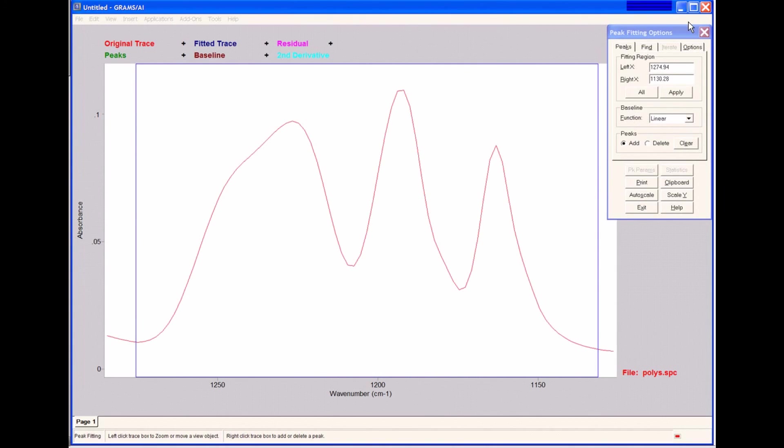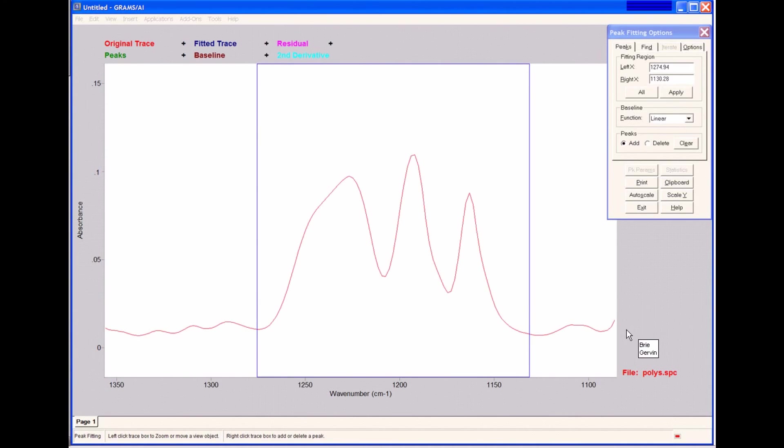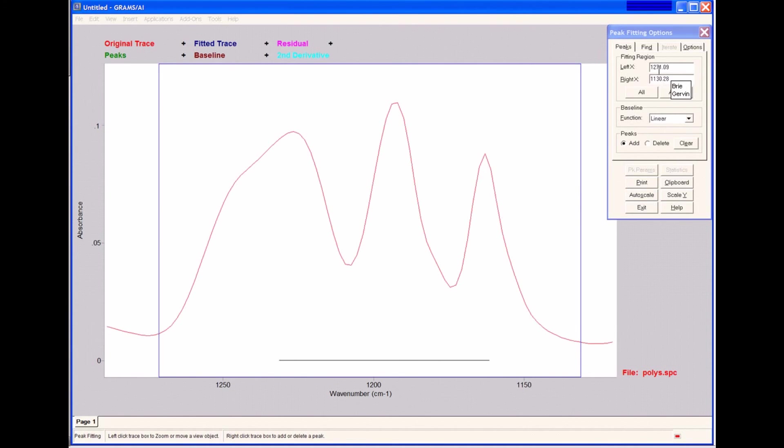So let's get started in using the peak fitting application. Now we've already set our region using Grams AI. But if we wanted to change this region, we can use the auto scale feature to auto scale the entire trace. We can click and drag a box to zoom in on a peak fitting region. As I mentioned previously, we can adjust the region by either moving the blue lines at the edges or typing values into the left and right boundaries.